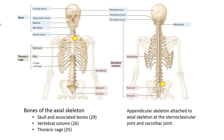As we've previously discussed, the skeletal system is divided into two parts: the axial skeleton and the appendicular skeleton. The axial skeleton, illustrated in this figure, is composed of the bones found along the central axis of the body, and we typically divide these bones into three different regions.